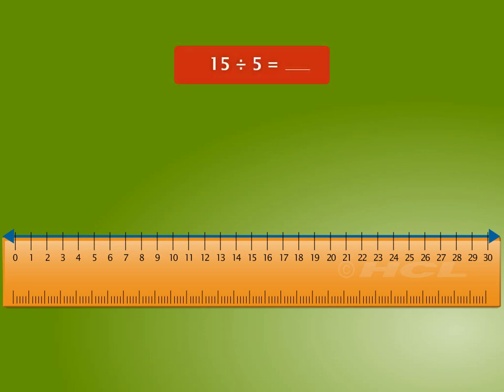Let's divide 15 by 5. Remember that the number to be divided is called the dividend and the number by which we divide is called the divisor. Here, 15 is the dividend and 5 is the divisor.